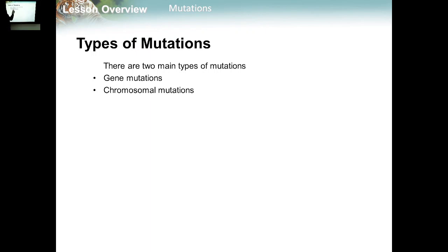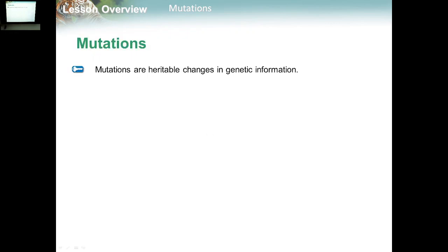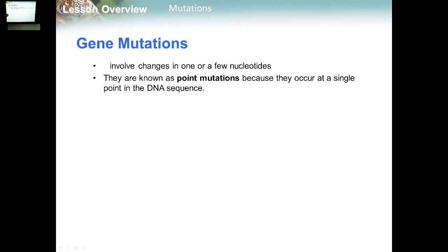When we talk about the gene, we are talking about a small sequence of the DNA, while when we talk about the chromosomal mutation, we are talking about a huge or large sequence of DNA. Let's start with the first type, which is gene mutation.